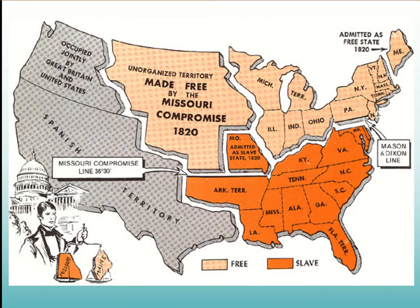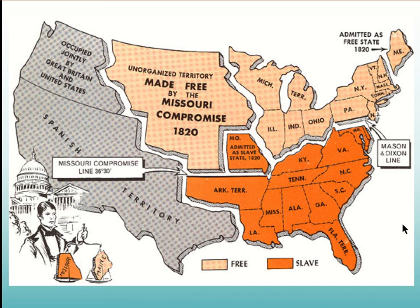Now let's look at a map. The orange states are your slave states, the tan colored states are your free states — and if we count them, the numbers would be even. The slave state is Missouri, the free state is Maine. And then this line below Missouri — the 36°30' line — is going to divide the slave states and the free states. Eventually the Southern states thought they'd expand this land line all the way to the coast and into Mexico, with lots of slave territory. But that was their bet back at this time in 1820.